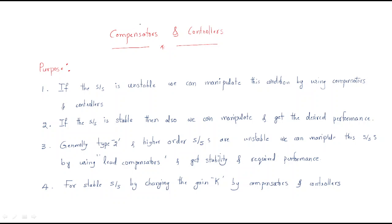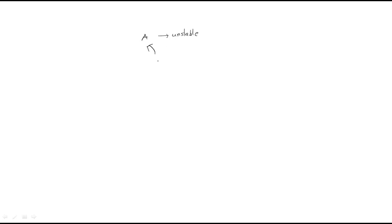In this session we will discuss compensators and controllers, which are generally the last topic in control systems. The first purpose of compensators and controllers is to stabilize an unstable system. If a given system is unstable, we can manipulate this condition using compensators and controllers to make the unstable system into a stable system.